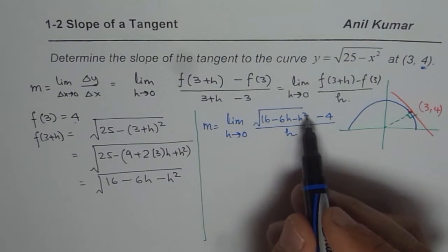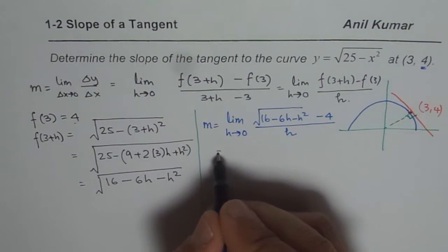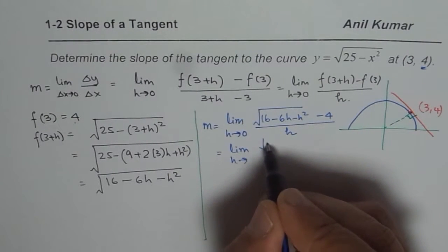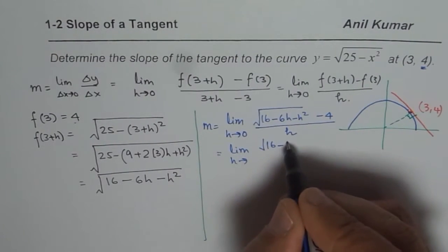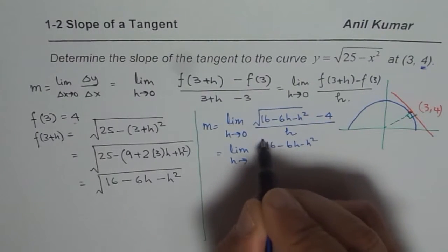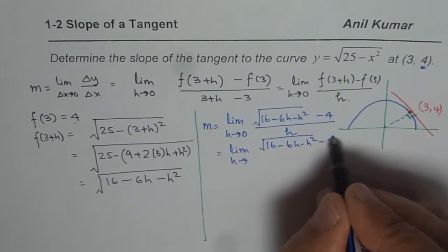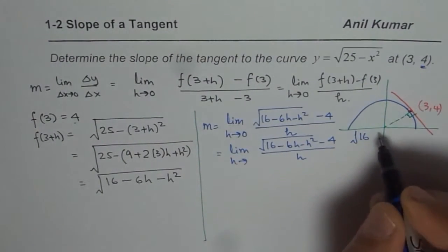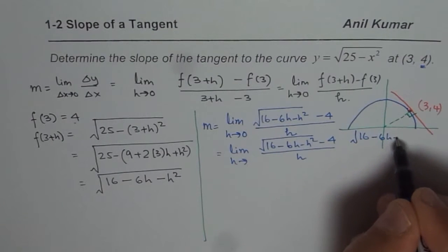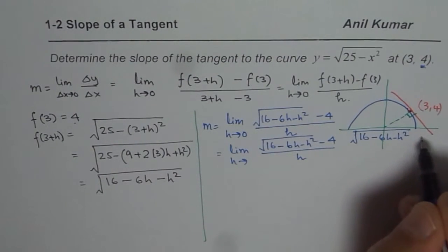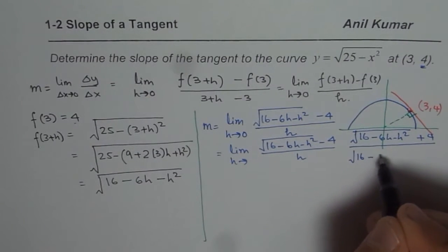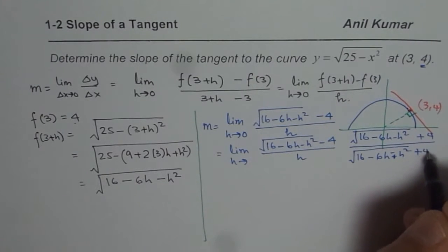Now to solve this equation, we need to rationalize it. So we will multiply and divide by the conjugate of the numerator. So in this case, we will rationalize using the conjugate of the numerator. So we will multiply and divide by square root of 16 minus 6h minus h square plus 4. That is what the conjugate will be.